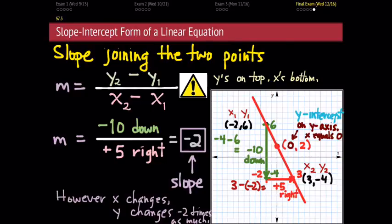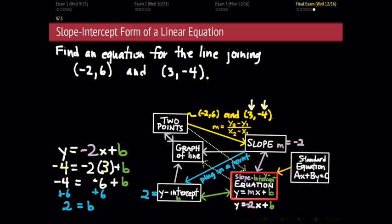So all told: we started with two given points, negative 2, 6 and 3, negative 4. We used those points to find the slope using the formula — difference in y's divided by difference in x's. Then we used that slope and one of our points to find the value of b using the template equation. Now that we know b, the last step is to plug it into our equation to complete the picture: y equals negative 2x plus 2. That's the slope-intercept equation for this line.